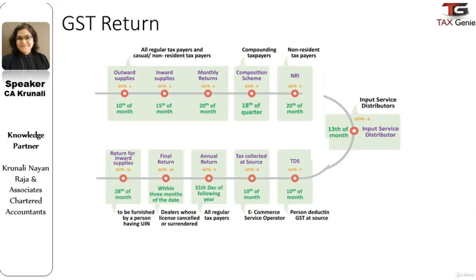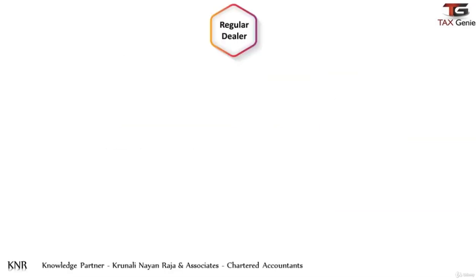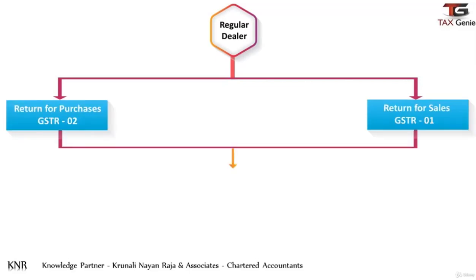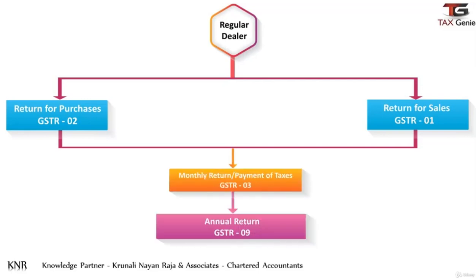GST Return 11 is the return to be filed by persons having a UIN. It is a return for inward supply and it is due by the 28th of the month following the month for which the statement is filed. In summary, a regular dealer has to file four returns in total: GST Return 1 for monthly sales details, GST Return 2 for monthly purchase details, GST Return 3 for monthly final filing and tax payment, and GST Return 9 as the annual tax return.